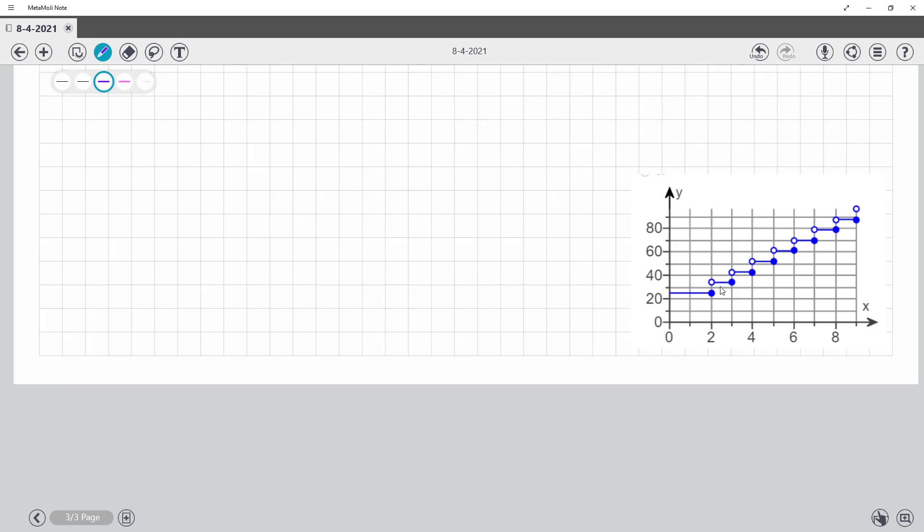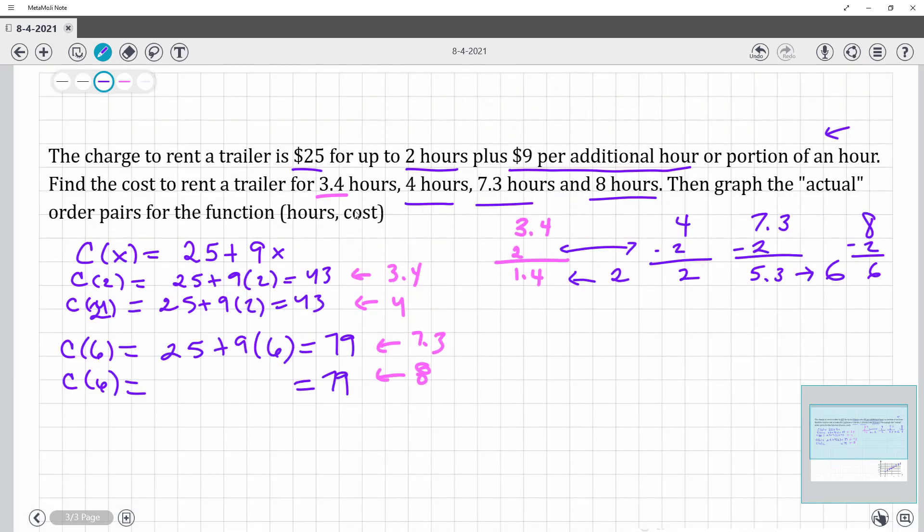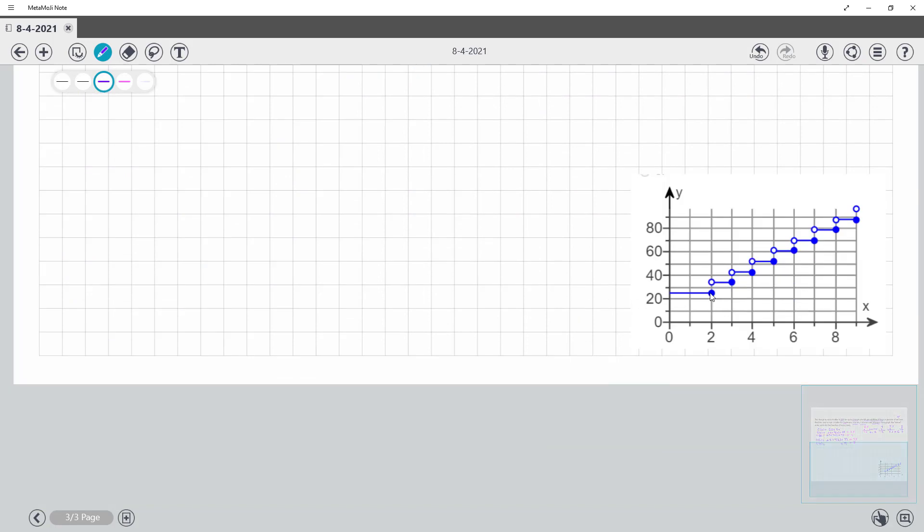So if you look at this graph, if you're at 2, remember the open circle means you don't include it. So this is our, back up here, our 25. So up to 25, and then you go past it until you get to the next hours, and the next ones, and so on. So these are the ordered pairs if you are actually doing these individually.